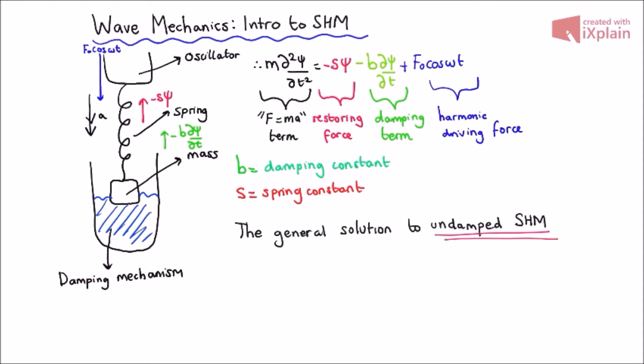If we set the damping and driving force to zero, we get the following general solution, where A is the amplitude of the wave and the omega t plus phi is the phase used to describe the location of the wave within a certain wavelength. We'll need this later when we have a look at superposition and beats.